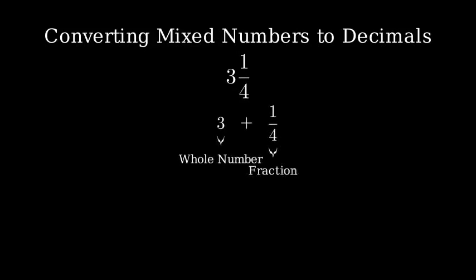A mixed number has two parts: a whole number part which in this case is 3, and a fractional part which is 1 fourth.